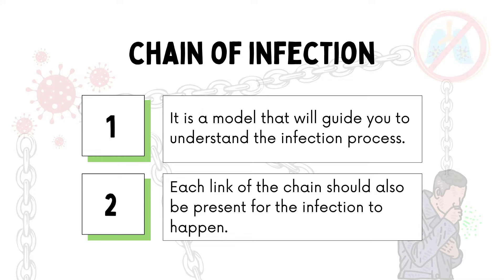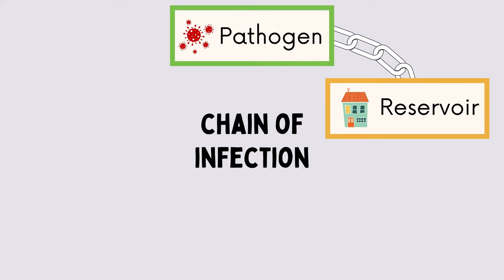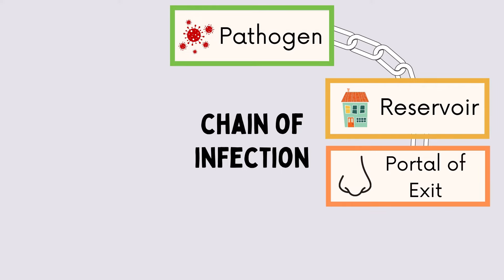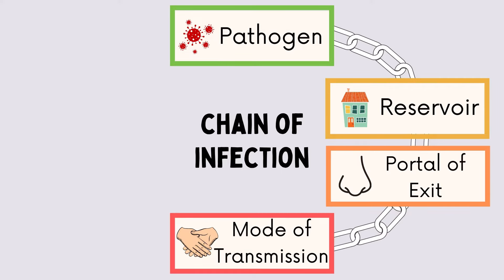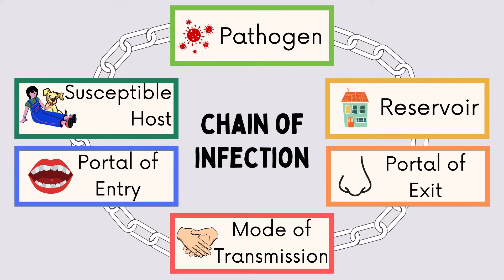Each link of the chain should be present for the infection to happen. Each link represents a step in the transmission. It involves the pathogen, reservoir, portal of exit, mode of transmission, portal of entry, and susceptible host. Let's discuss those links one by one.